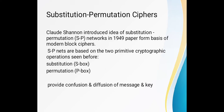Next is the substitution and permutation cipher. Claude Shannon introduced the idea of substitution and permutation — the SP network — in a 1949 paper, forming the basis of modern block ciphers. It uses a network of substitution and permutation known as SP nets, based on two primitive cryptographic operations: substitution and permutation.